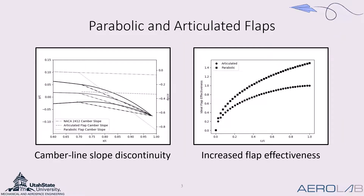Before we discuss these morphing wings, we must first discuss two types of flaps. The first is an articulated flap, which has a single articulation at the hinge point, after which the deflection is constant along the aft portion of the airfoil. The second is a parabolic flap, in which the camber line conforms to a parabolic profile aft of the hinge point. The camber line slope of the articulated flap when deflected is discontinuous, while the camber line slope of the parabolic flap is continuous — it is first-order continuous. This discontinuity is not beneficial, as it causes an adverse pressure gradient, increasing the pressure drag on the airfoil when deflected.